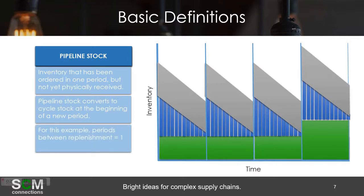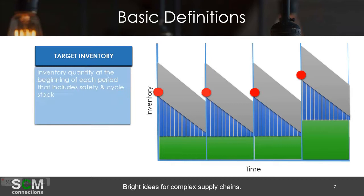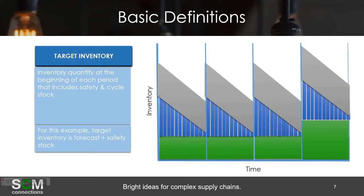For pipeline stock, that's inventory that's been ordered in one period but not yet physically received. Pipeline stock converts to cycle stock and potentially safety stock if it was used at the beginning of a new period. In this example, the periods between replenishment is one. For target inventory stock, that should be inventory at the beginning of each period and includes safety stock, cycle stock, and pipeline stock. For this example, target inventory is forecast plus safety stock.